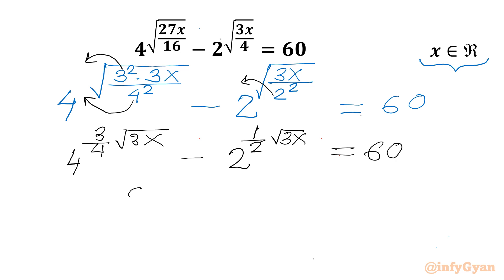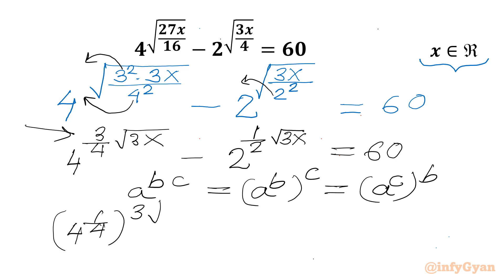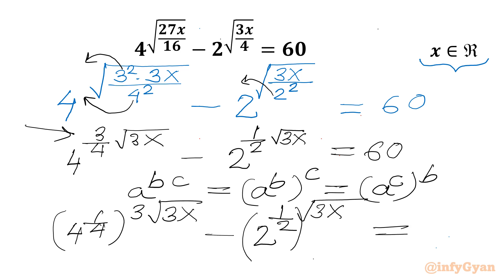Now I will use one exponential property: a raised to the power b times c equals a raised to the power b, whole raised to the power c, and it also equals a raised to the power c, whole raised to the power b. Applying this here, I can write 4 raised to the power 1 over 4, whole raised to the power 3 times square root 3x, minus 2 raised to the power 1 over 2, whole raised to the power square root 3x, equal to 60.